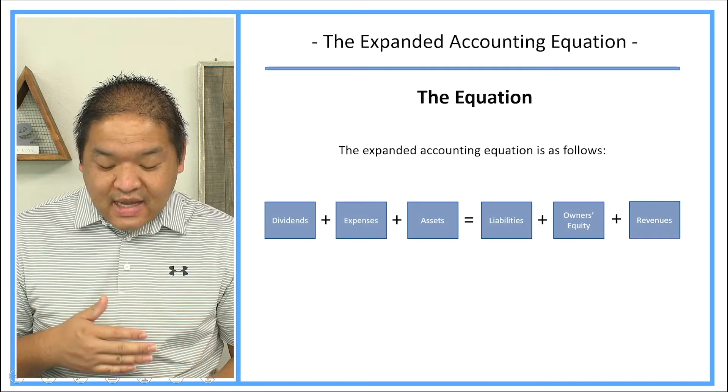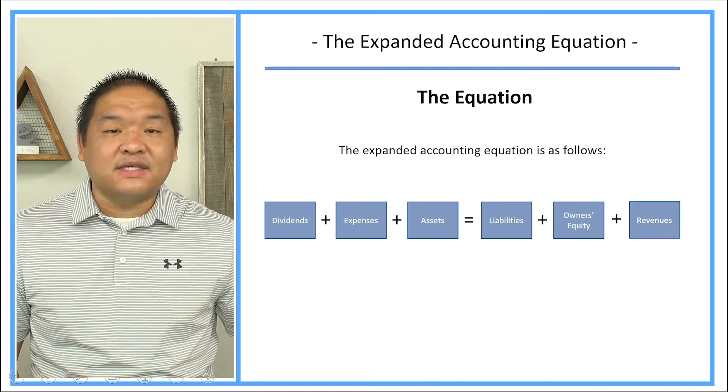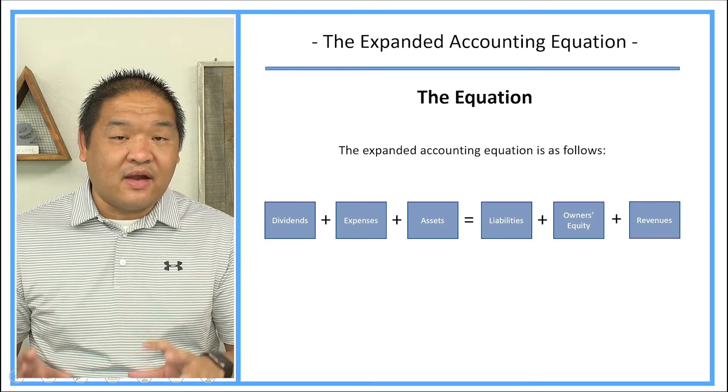So the expanded accounting equation is this: it is dividends plus expenses plus assets equals liabilities plus owner's equity plus revenues. So that would be our expanded accounting equation.